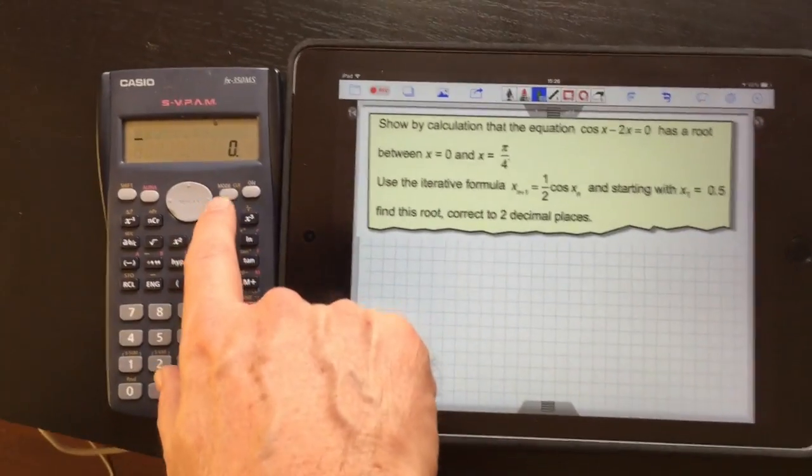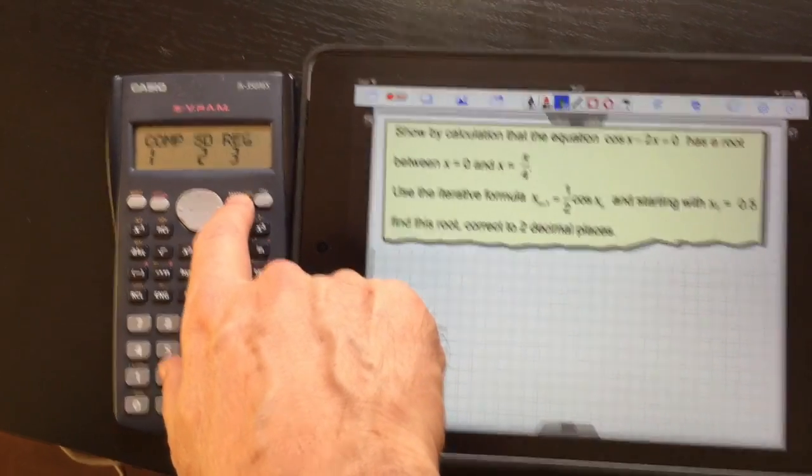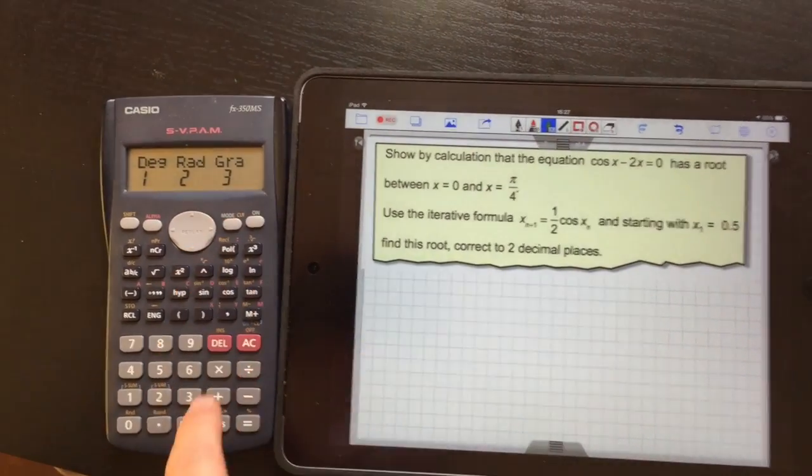First of all, we need to make sure for this one that the calculator is in radian mode. So we press mode, mode again, and make sure we select number 2.